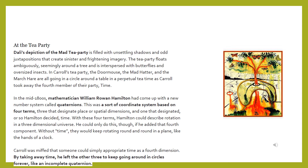With these four terms, Hamilton could describe rotation in a three-dimensional universe, but only if he added that fourth component. Without time, they would keep rotating round and round in a plane like the hands of a clock. Carroll was miffed that someone could simply appropriate time as a fourth dimension. By taking away time, he left the other three to keep going around in circles forever, like an incomplete quaternion.